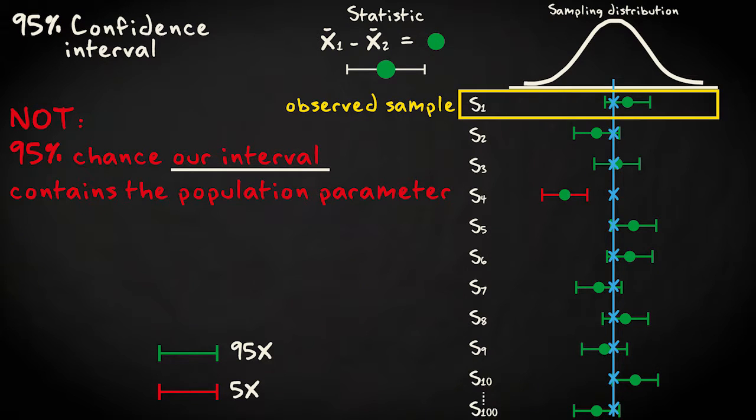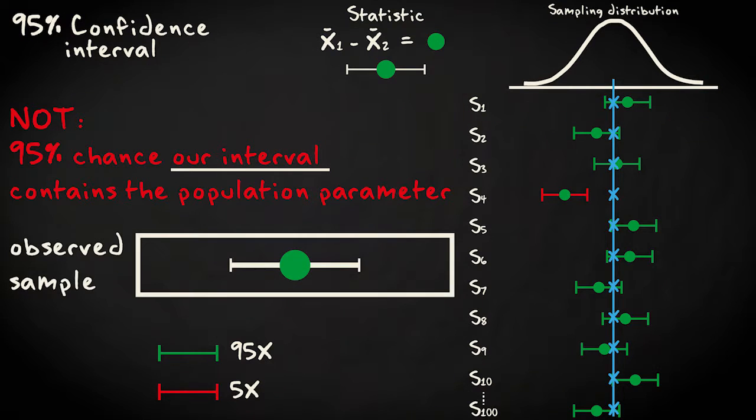Note that this is not the same as saying that there's a 95% chance that the interval, based on our sample, contains the population value. In practice, we have only one sample. It either contains the true population value, or it doesn't. We don't know. But since it's likely that it does, we consider the values in the interval to be plausible.